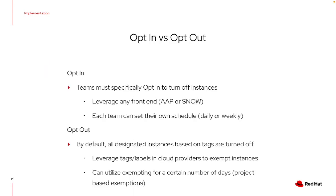So what is the implementation and how does this actually work? There are two different ways to look at it — an opt-in or opt-out mentality — and it really depends on how your organization operates and the culture that exists. With opt-in, each individual team can look at their virtual machines and environments and opt in to the capability to turn them off on their own set schedule.